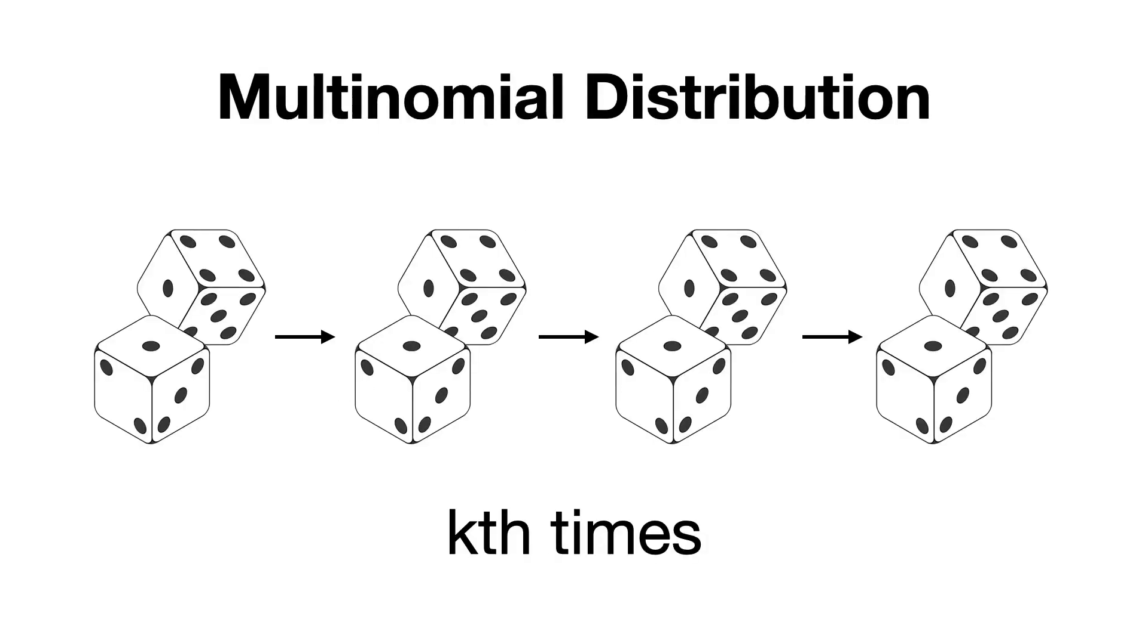Finally, we have the multinomial distribution, which extends the categorical distribution by allowing for multiple trials, each with the same set of possible outcomes.